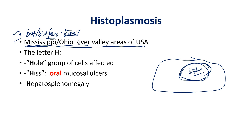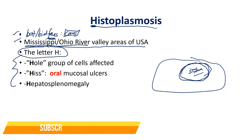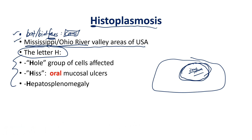Now the mnemonic for histoplasmosis. All fungal pneumonias cause a mild, slow-onset pneumonia before dissemination, but each has unique characteristics. For histoplasmosis, we use the letter H for three key features. The first H stands for 'whole' — as in a whole group of cells affected — meaning pancytopenia. In disseminated histoplasmosis, the bone marrow is affected and you see a decrease in all blood cell types: red blood cells, white blood cells, etc.